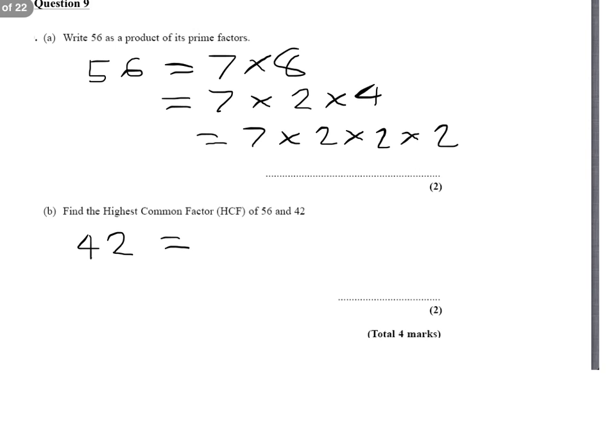So this will equal 2 times 21, which will equal 2 times 3 times 7.